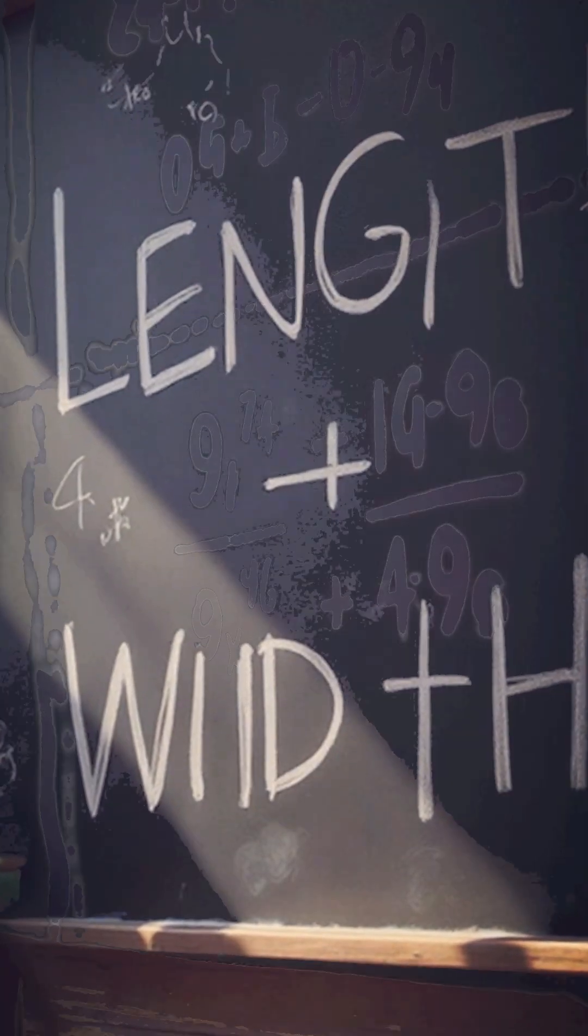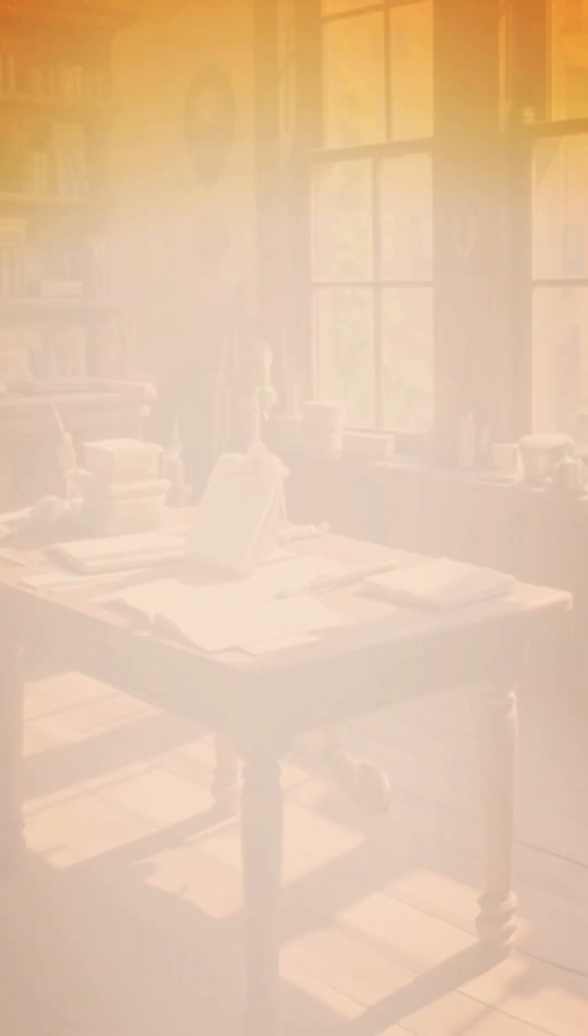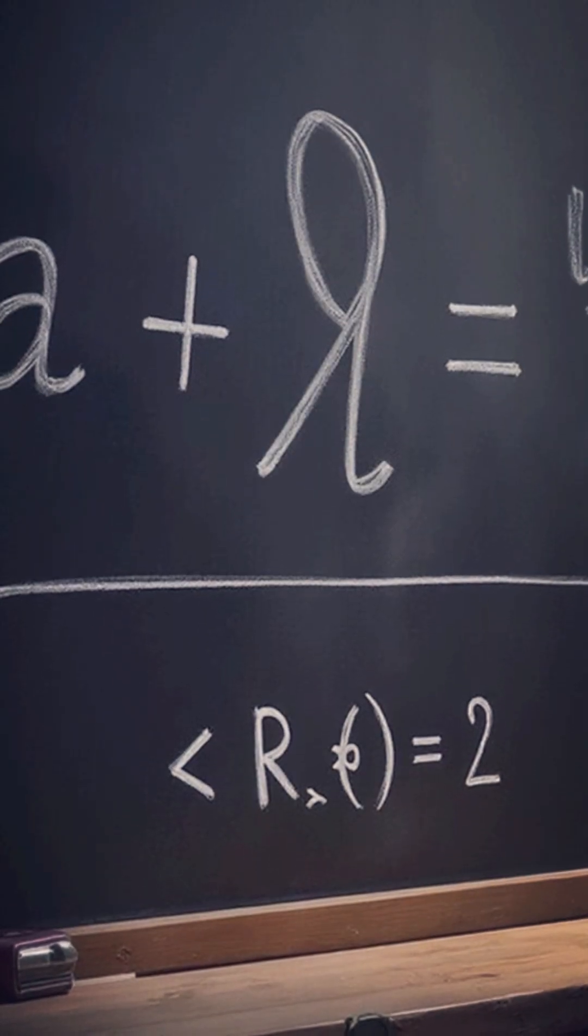So the area became length times width equals r times pi r equals pi r squared.